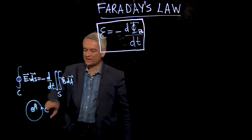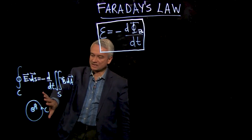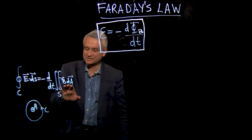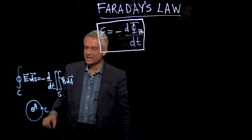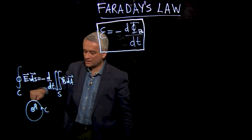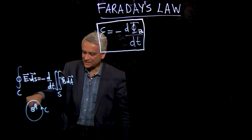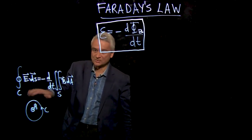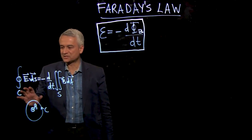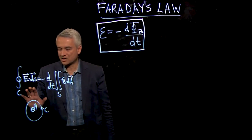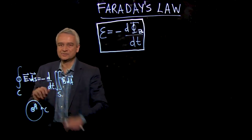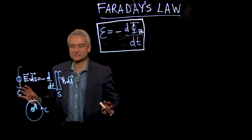So if we do our contour integral around the contour c in this direction, then when we do the integral of B dot dA, we should define our dA with a unit normal vector that points out at you because I used the right-hand rule as we learned how to do. So that tells us how to relate the definition of this contour integral to this surface integral in the right way using our right hand so that we get a true equation.